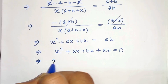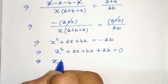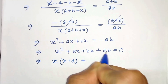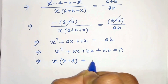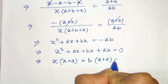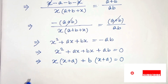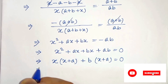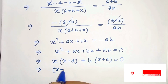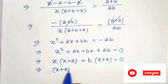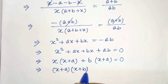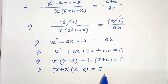Now let's take common x from the first two terms: x(x + a). And from the remaining terms take common b: b(x + a) equals 0. So we get (x + a)(x + b) equals 0.